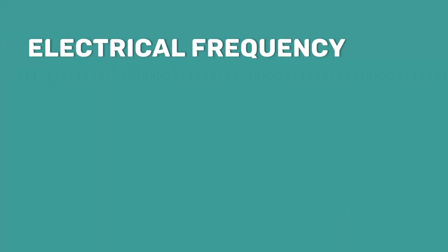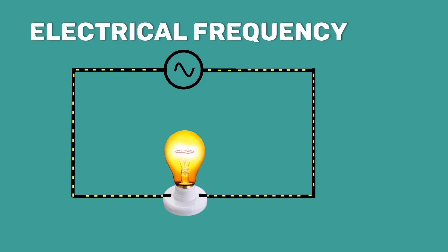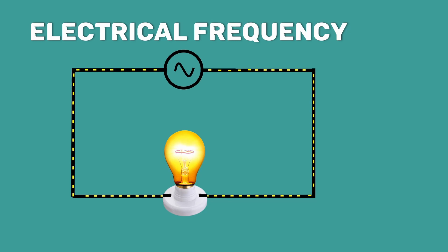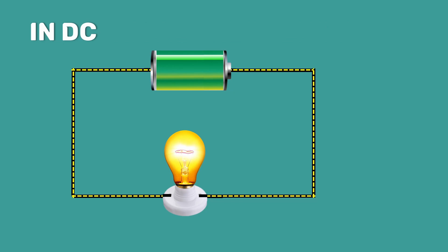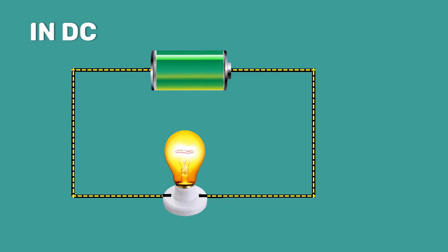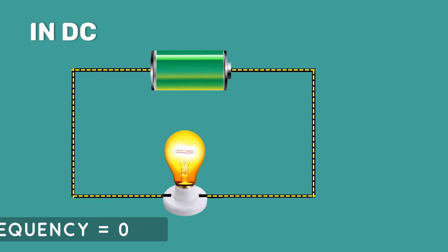Similarly, electrical frequency means the total number of times the electrons go back and forth in one second. Since in DC the electrons don't change their direction, the frequency is zero.